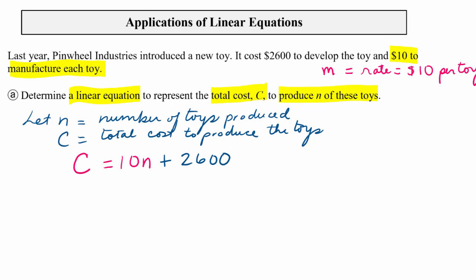So when we have not produced any toys yet, n equals zero, we still have this $2,600 bill to pay, or Pinwheel Industries does, has this $2,600 cost to pay for the cost of developing the toy. So that's like our intercept. Okay, so there's our equation. I hope that made some sense.